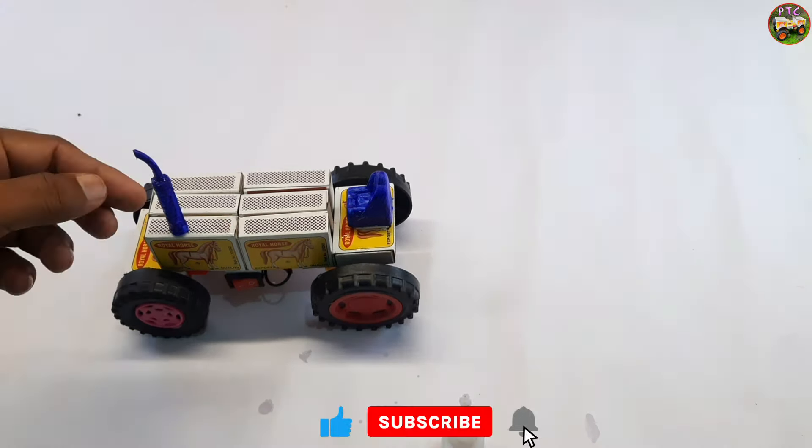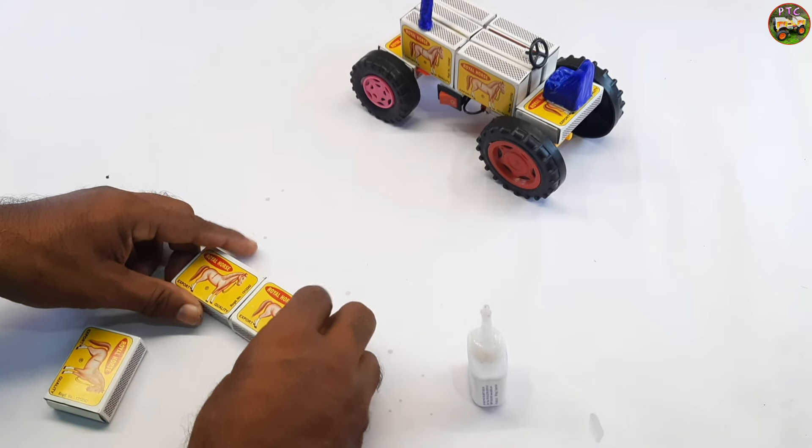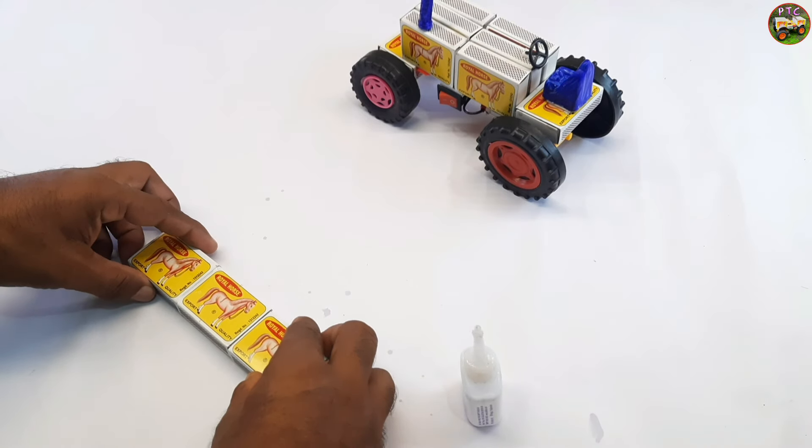Now the tractor engine is ready. Now I made the frame. These are match boxes. Match boxes are joined with glue.